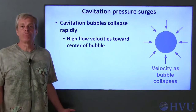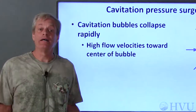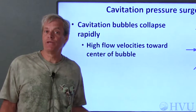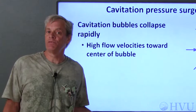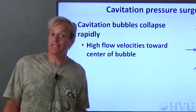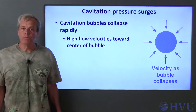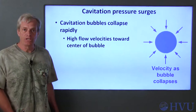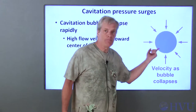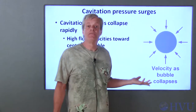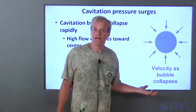Cavitation bubbles form when the fluid enters a low pressure zone. Unlike bubbles created by heat input, the only reason the cavitation bubbles exist is the low pressure surrounding them. So if the bubble moves into a higher pressure region, there's nothing inside the bubble to resist its collapse. The vapor converts back to fluid almost immediately.